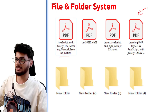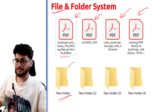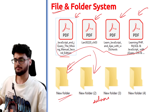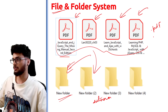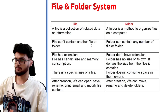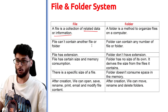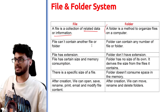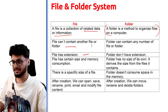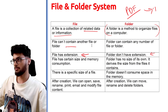File and Folder System: Files are actual documents — like PDFs or notes. Folders are places where you can store multiple files together. One important difference: folders do not have an extension, whereas files do — for example, .pdf, .jpg (image), or .mp3 (audio). A file is a collection of related data and information; a folder is a method to organize files. A folder can contain other folders as well as files, but a file cannot contain other files.